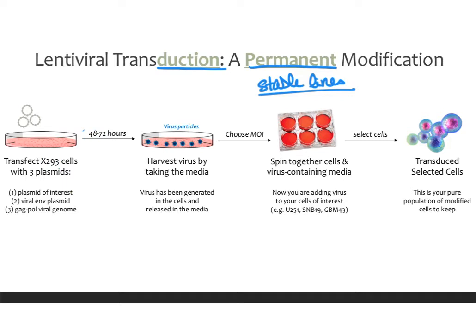Now you have all these virus particles in your media, and you simply harvest the virus by taking the media off the cells, putting it in a tube, spinning it down to remove any debris, and moving the supernatant to a new tube — this is your virus. Some people like to concentrate this virus using available protocols, but in most cases using the media directly is sufficient to get a good infection.